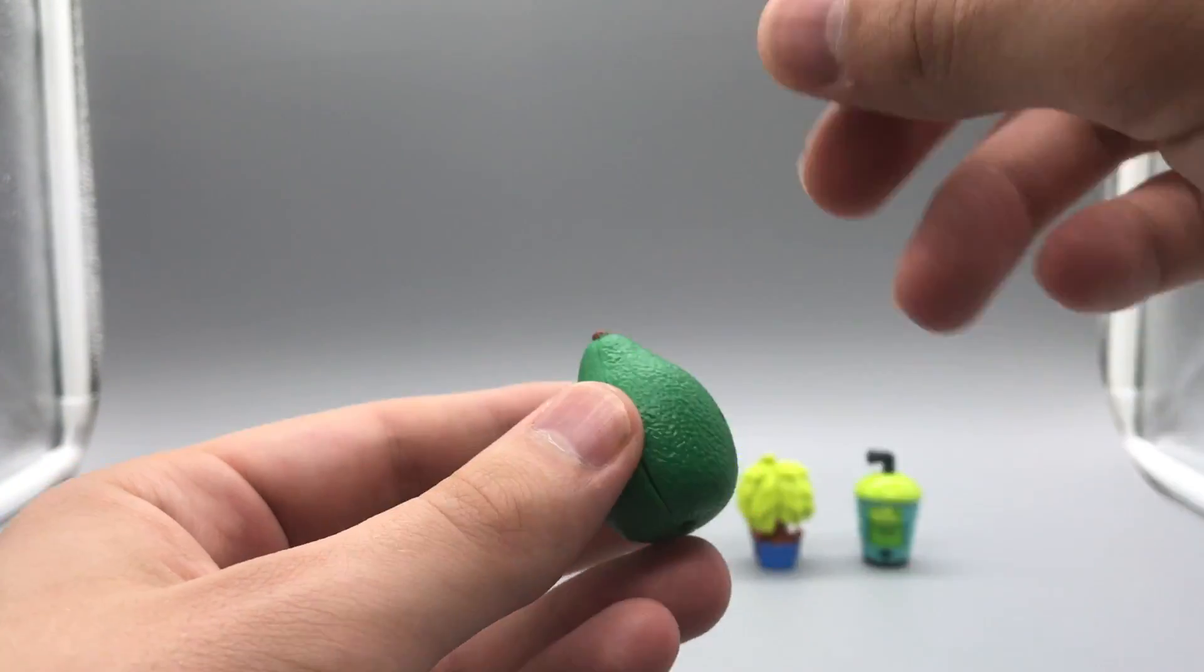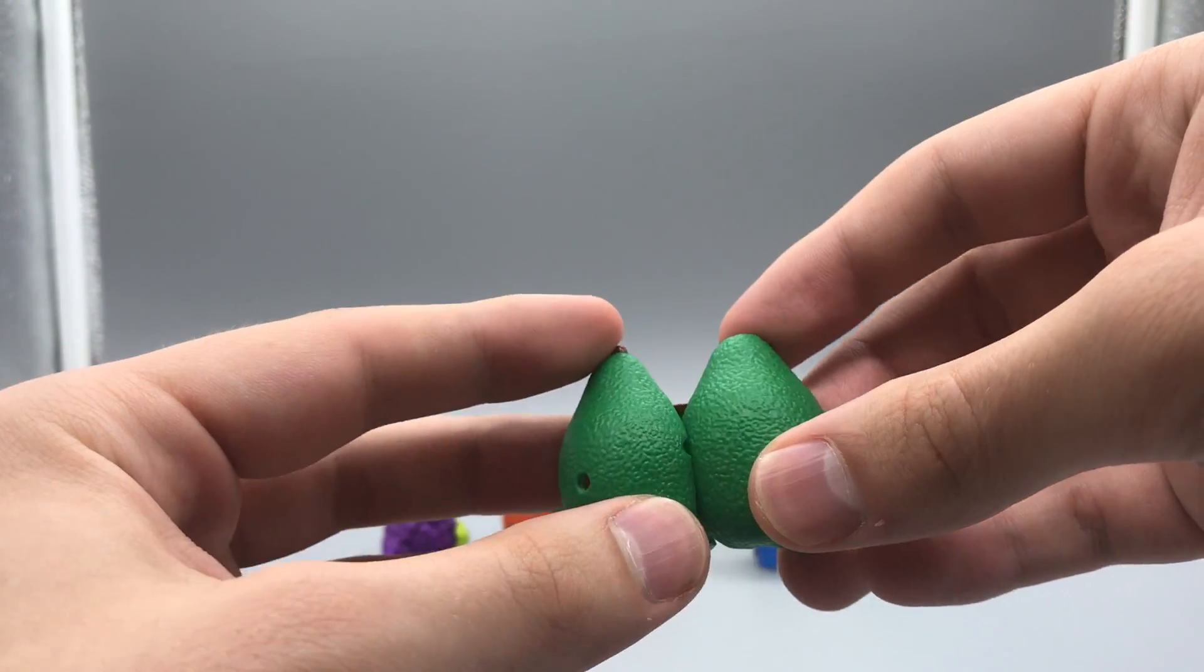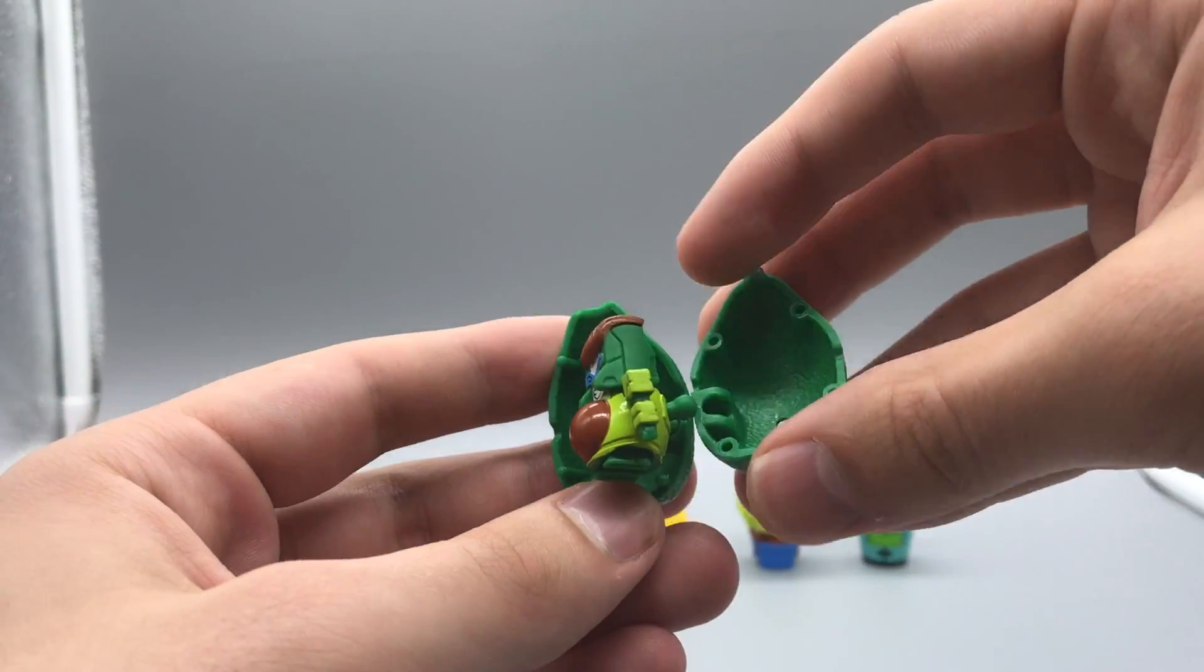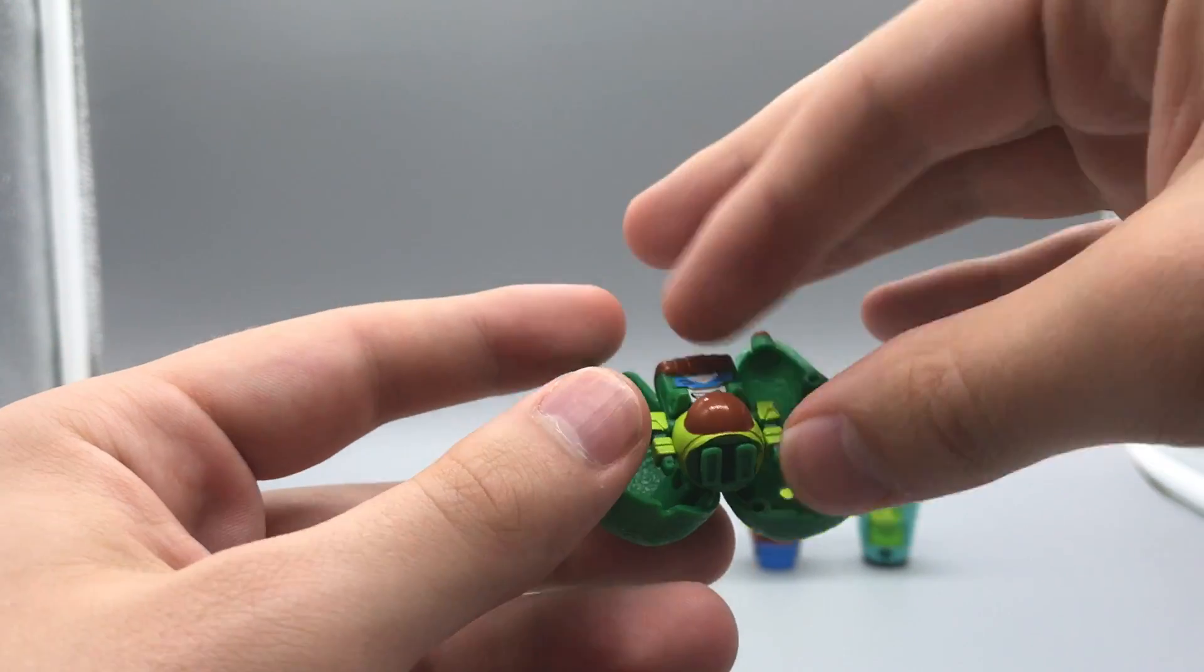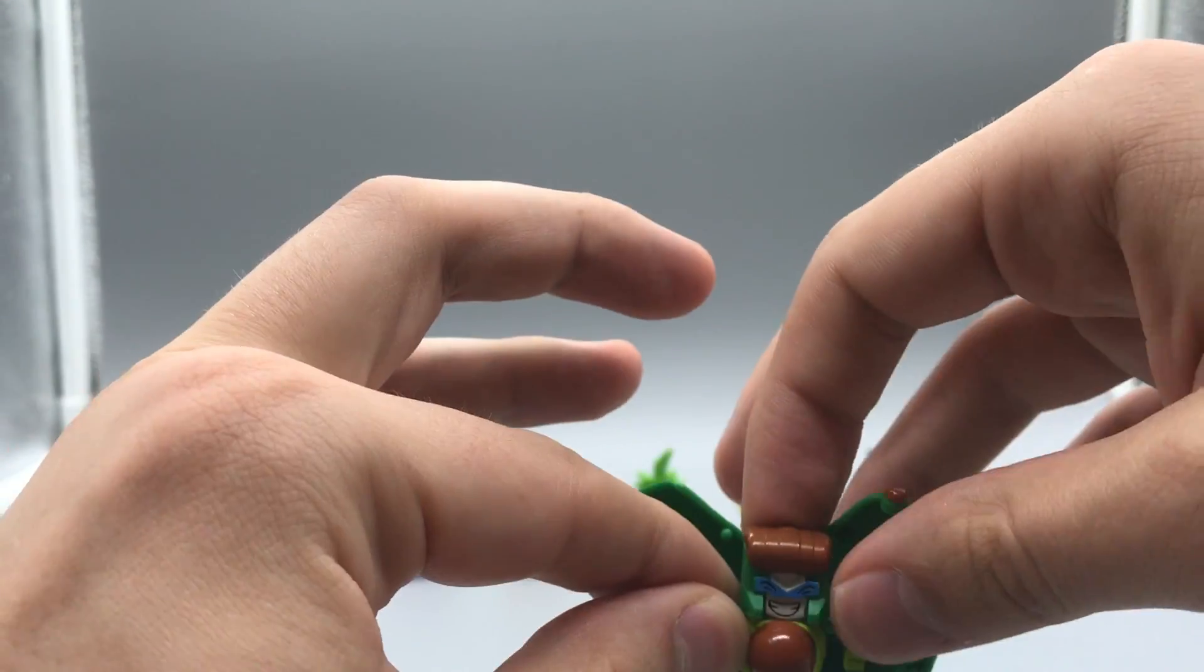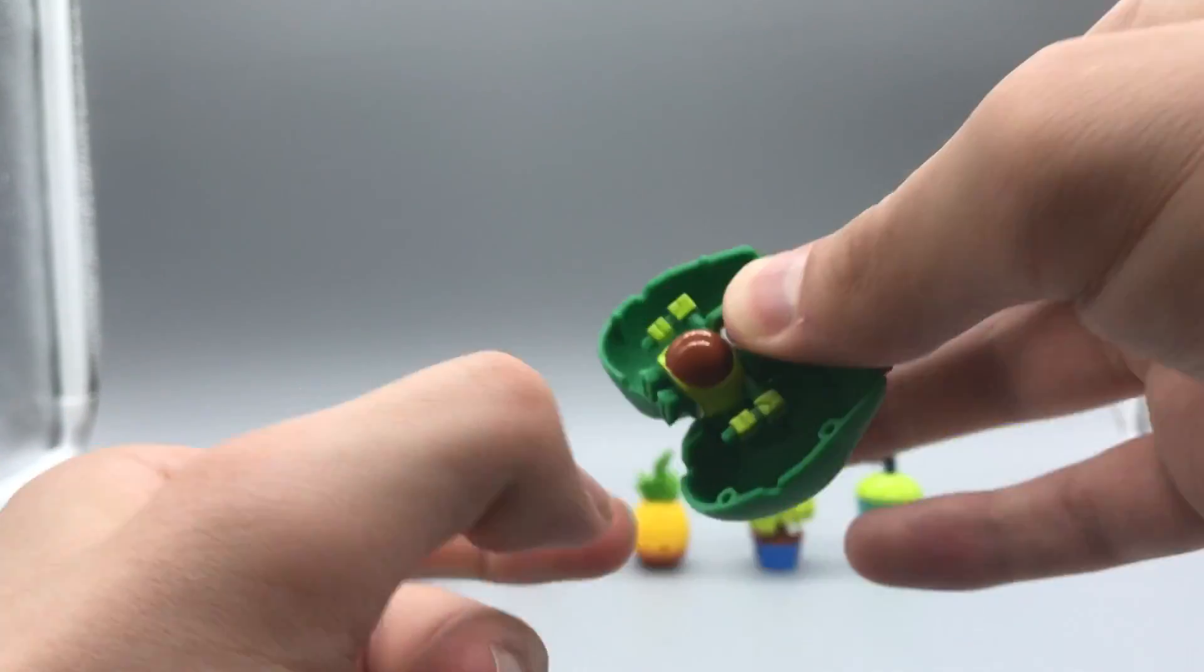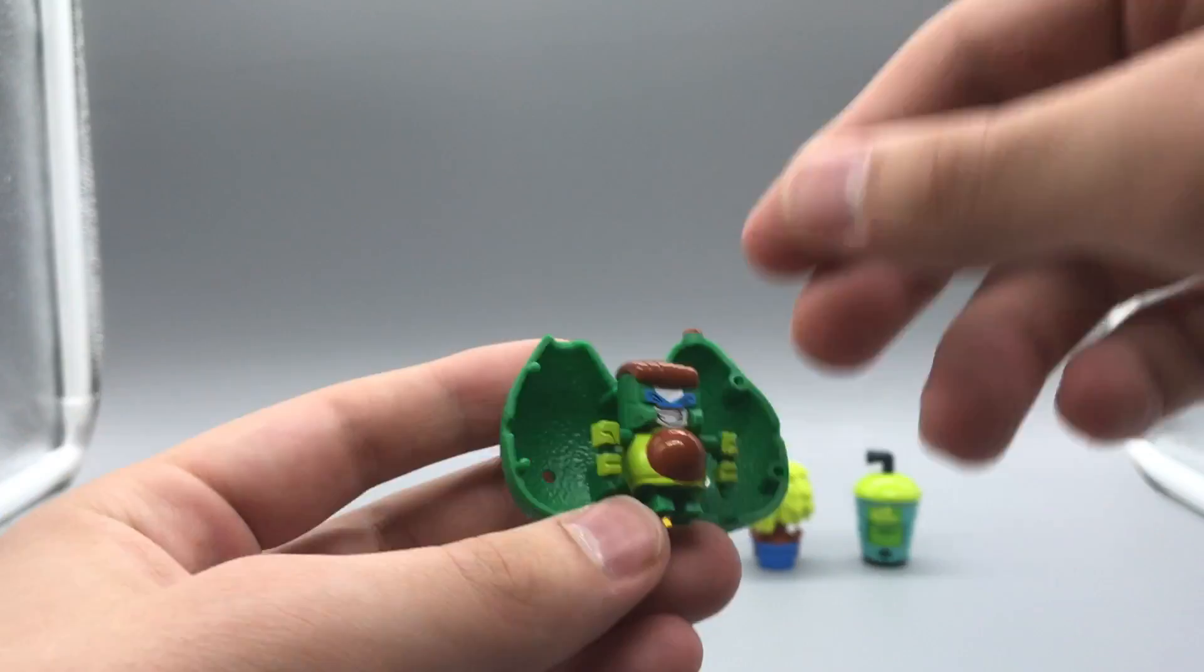So transformation wise, to transform you are going to split the avocado pieces in half. They're gonna come around and they're going to fall off. I'll get to that in a moment. Then we're going to pull the arms out, pull the legs down and there is Avocandu in their robot mode.